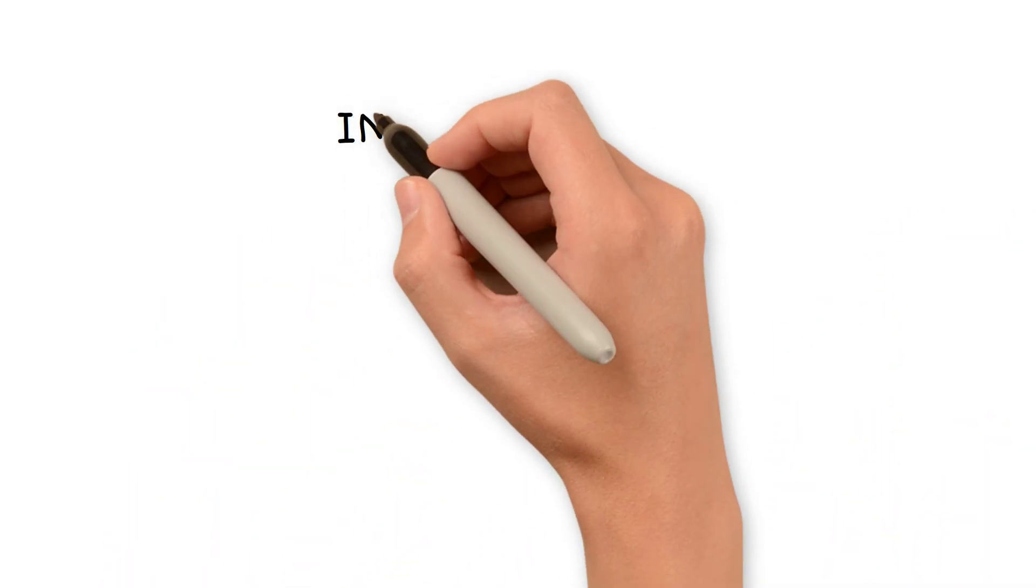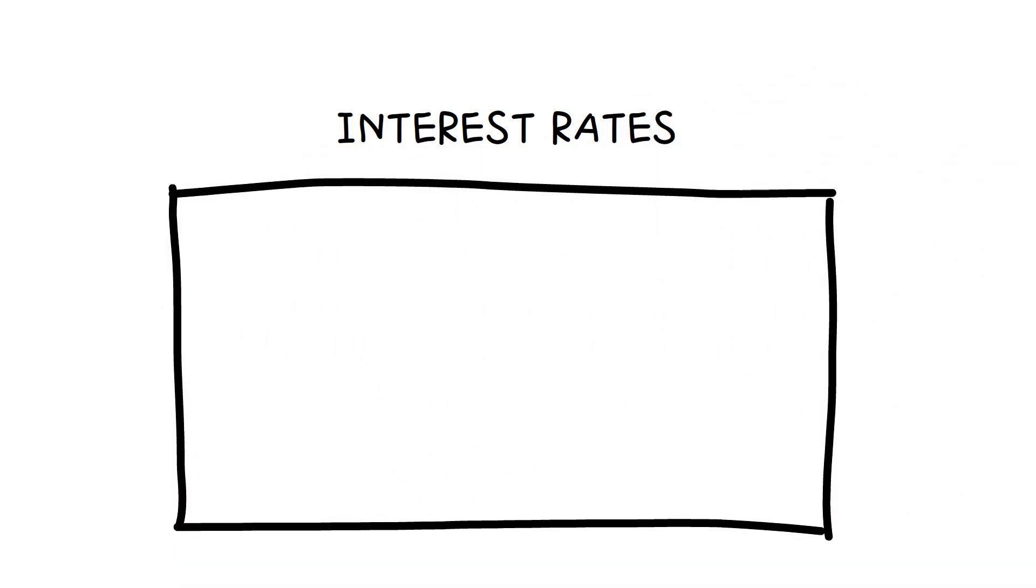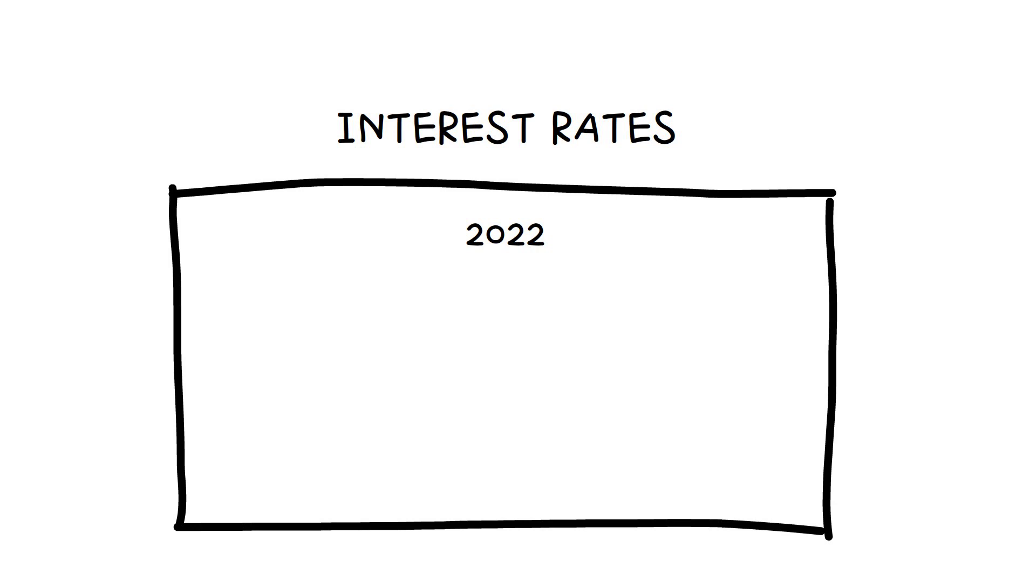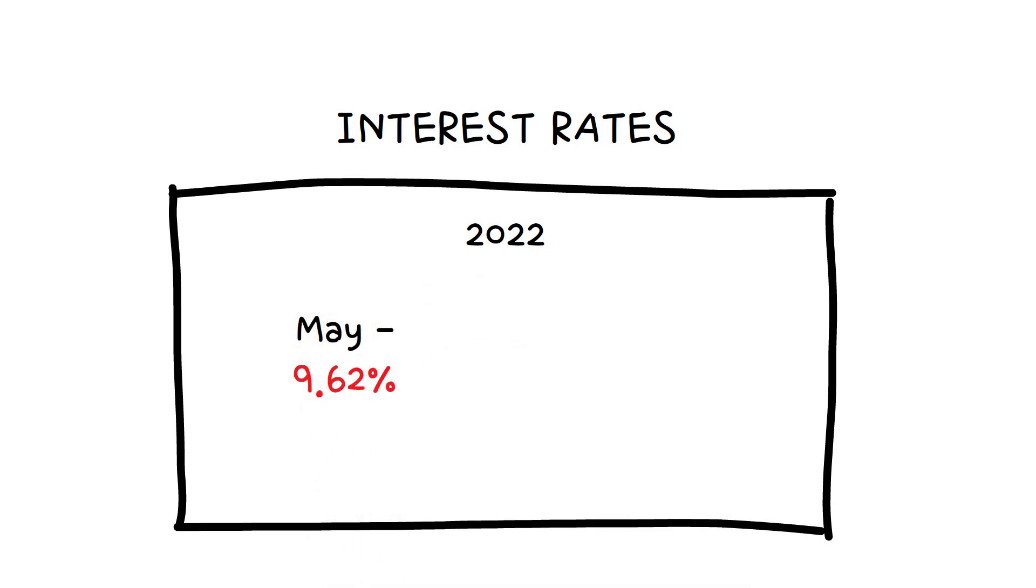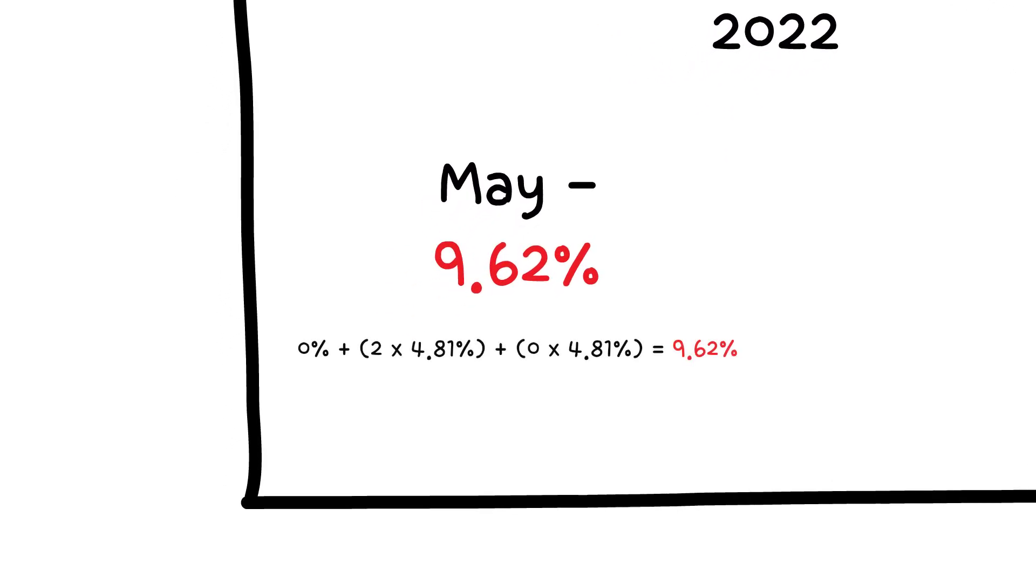So, what are the current I bond interest rates? As I previously stated, it changed in November. Due to the high inflation rate, it paid a huge interest rate of 9.62% from May to October 2022. The calculation is as follows.